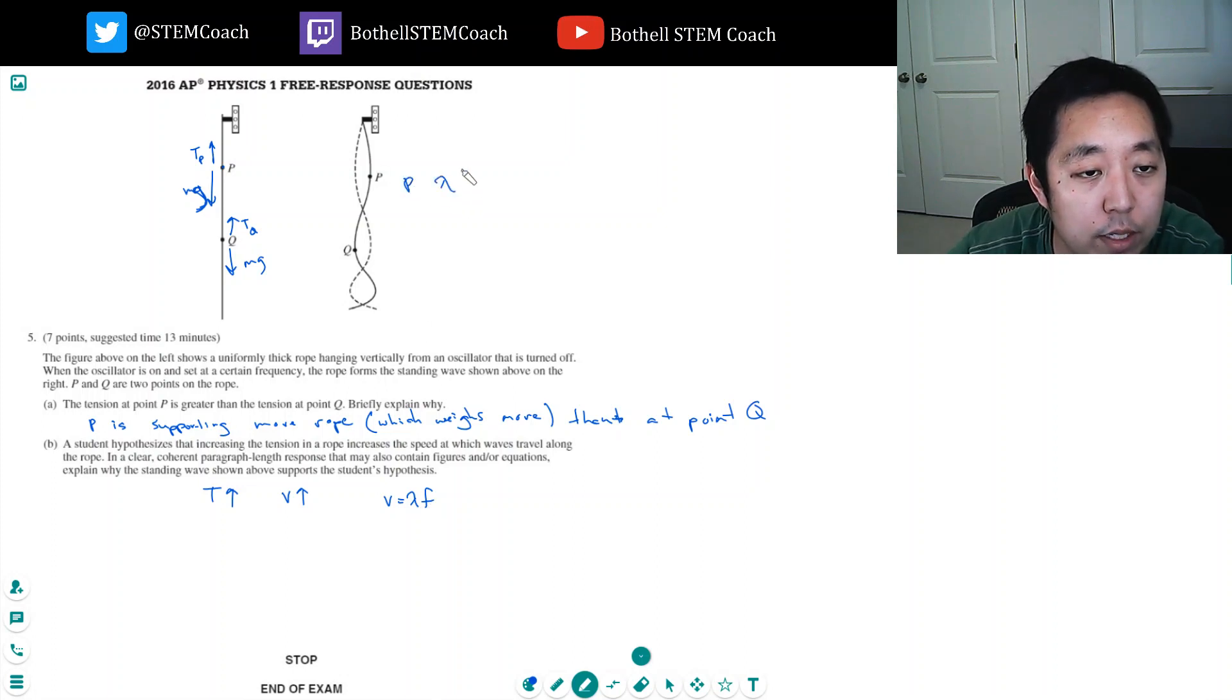If the velocity is wavelength times frequency, what's happening at P is the wavelength is longer—wavelengths from here to here, right? The wavelength is higher at P. When the wavelength is higher at P and the frequency is the same, the velocity goes up. And that's true.